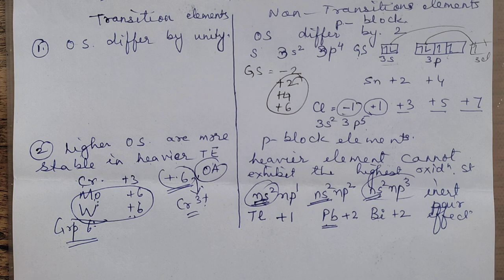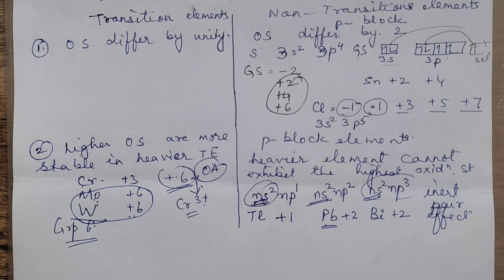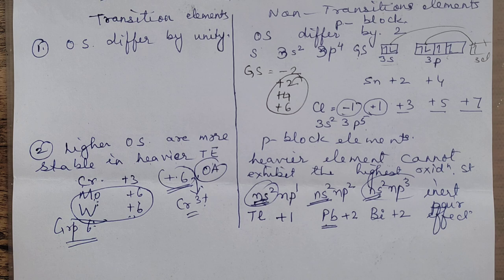I hope this is clear. So in this session I have completed the oxidation state topic. In another video, I will be explaining the electrode potential variations — how for some ions +2 is more stable, for some +1 is stable, and all those questions we will be discussing. Thank you.